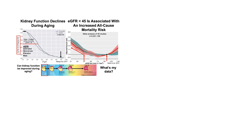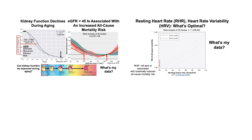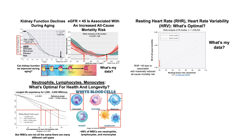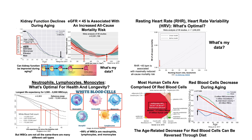In previous videos, I've proposed optimal ranges for biomarkers related to various organ systems, including EGFR in the kidney, resting heart rate and heart rate variability for the heart, immune cells including neutrophils, lymphocytes, and monocytes, red blood cells, and many other biomarkers.